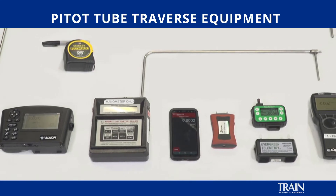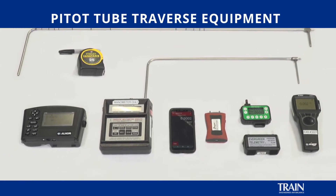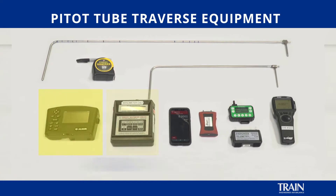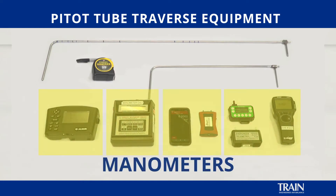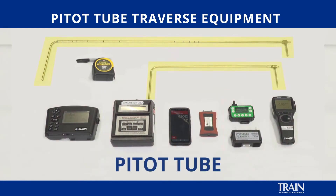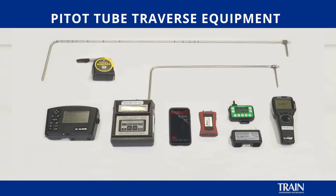Shown here are the different instruments we're going to need to perform a pitot tube traverse. Featured here are multiple manometers from different manufacturers. We're also going to need a pitot tube, a tape measure which will aid in measuring the grid locations for the pitot tube, and of course the ductwork itself.